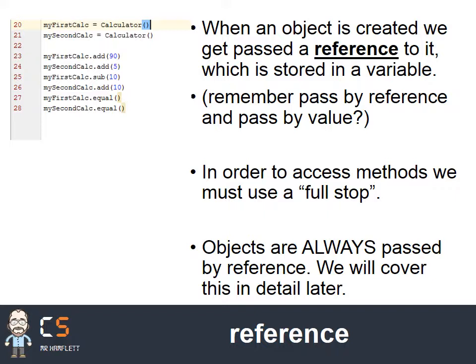When you instantiate an object, it creates a reference which gets stored in a variable. So effectively, objects are always passed by reference. The reference is a memory address pointing to where the object has been created in memory. This is very similar to the idea of pass by reference - any manipulation you do on the object will impact all of the references. To access methods, we use the full stop notation, and we always pass by reference with objects.